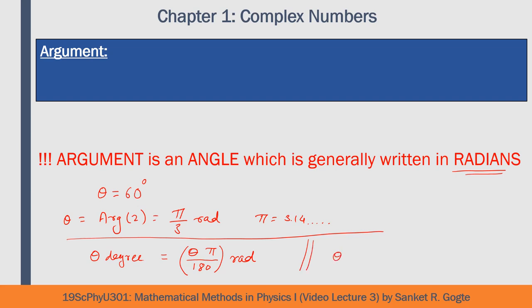To convert an angle theta given in degrees to radians, multiply by pi and divide by 180. Conversely, to convert an angle theta-prime from radians to degrees, multiply by 180 and divide by pi. This is because pi radians equals 180 degrees. This review will be helpful later when finding the arguments of different complex numbers.